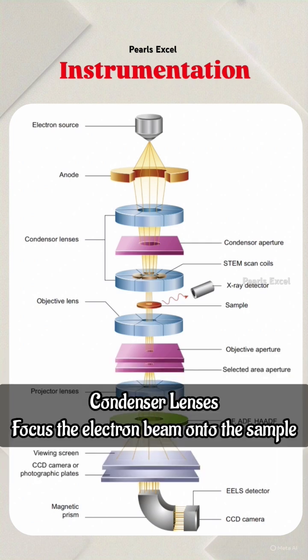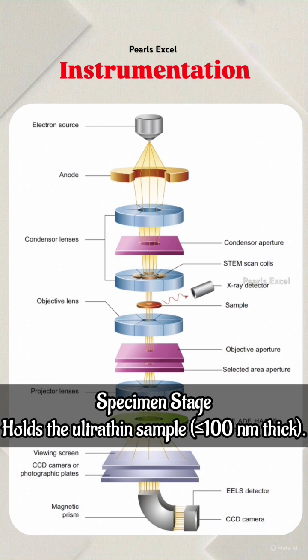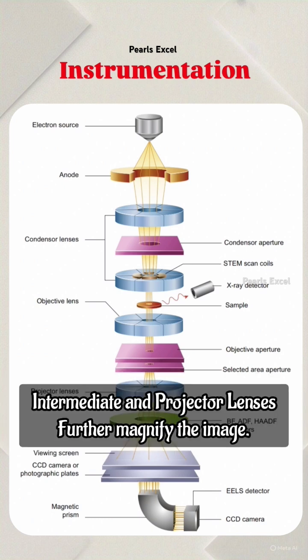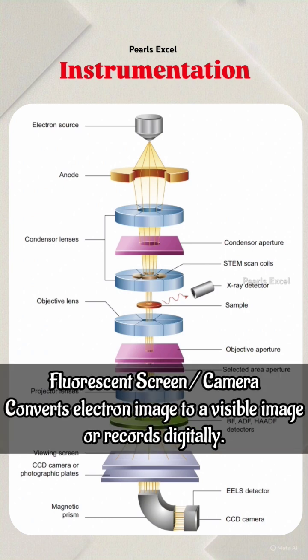Condenser lenses focus the electron beam onto the sample. The specimen stage holds the ultrathin sample, less than or equal to 100 nm thick. The objective lens and aperture form the initial magnified image; the objective aperture improves contrast. Intermediate and projector lenses further magnify the image. A fluorescent screen or camera converts the electron image to a visible image or records it digitally.